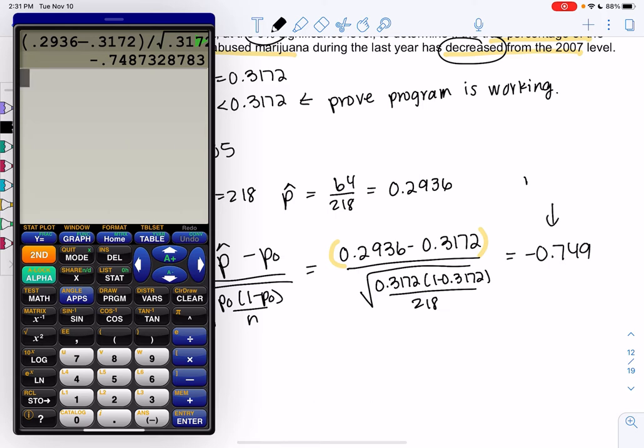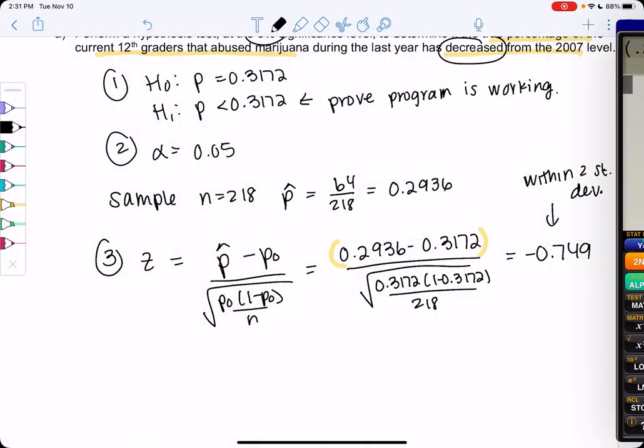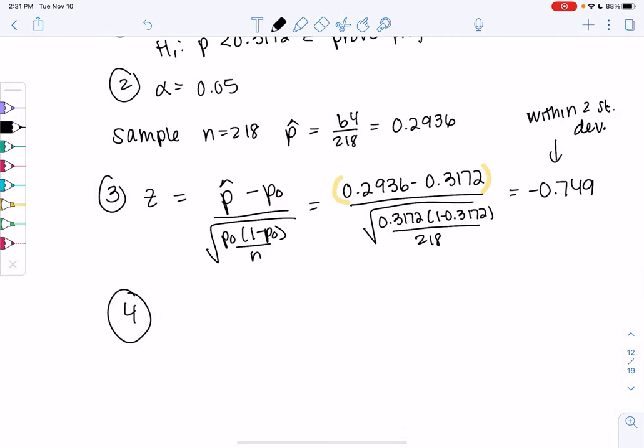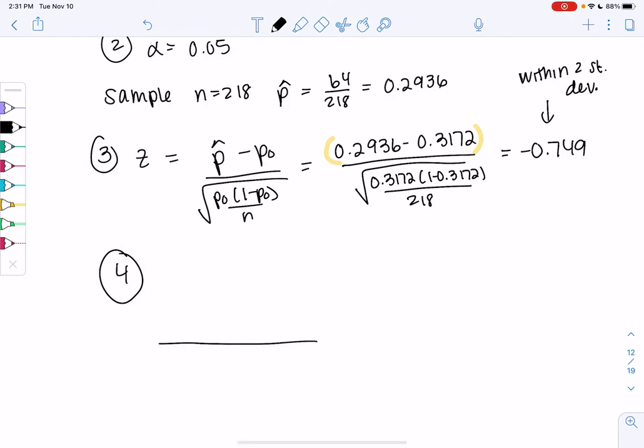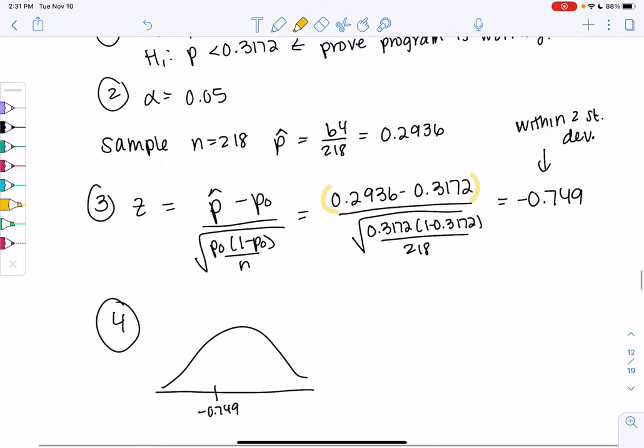So this is within two standard deviations, so it's probably just random, but again, the P-value is going to assess that risk. Let's draw the normal curve. We have a Z-score of negative 0.749, and then we are proving less than, so we're going to shade to the left. Left for less than.